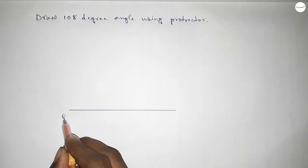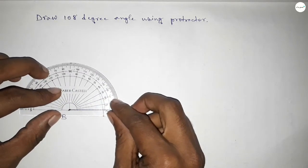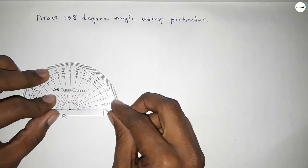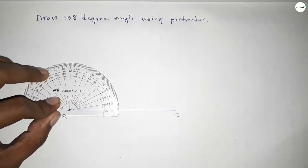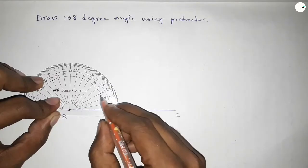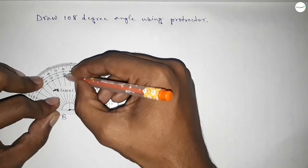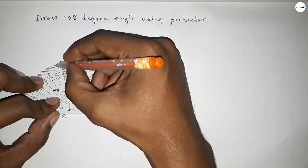Next, taking point B here and point C here. Now putting the protractor on point B perfectly, then counting the angles. So starting angle: 0, 10, 20, 30, 40, 50, 60, 70, 80, 90, 100, 105, 106, 107, 108. So this is 108 degrees.